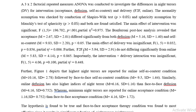The Bonferroni post hoc test revealed that acceptance — its mean and standard deviation — differed significantly from both diffusion and self-as-context. The face-to-face method did not differ significantly from the online method. The interaction term of intervention and delivery was also found to be insignificant. Figure 1 depicts that the highest night terrors are reported for the online method of delivery with self-as-context intervention, followed by face-to-face and self-as-context. The least night terrors are reported for online acceptance, then face-to-face acceptance.